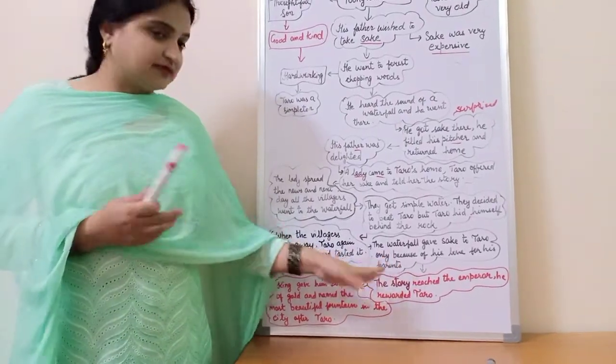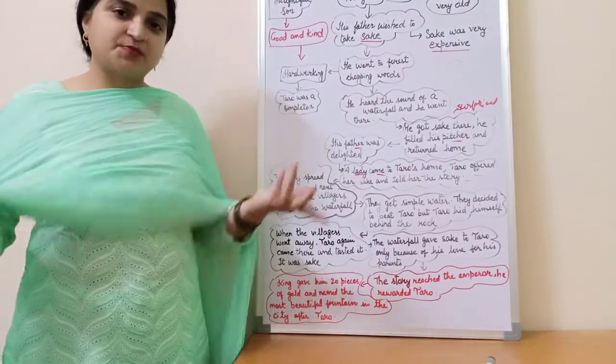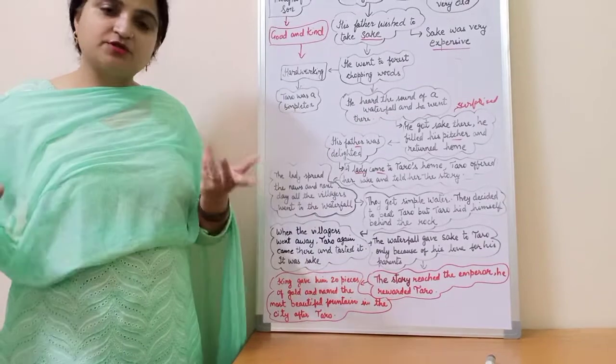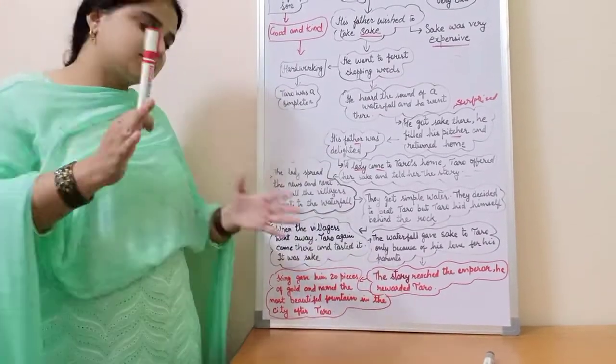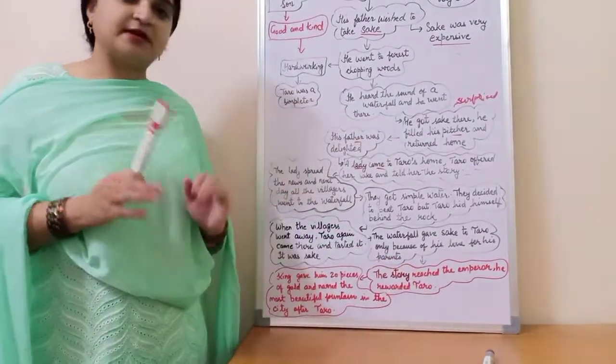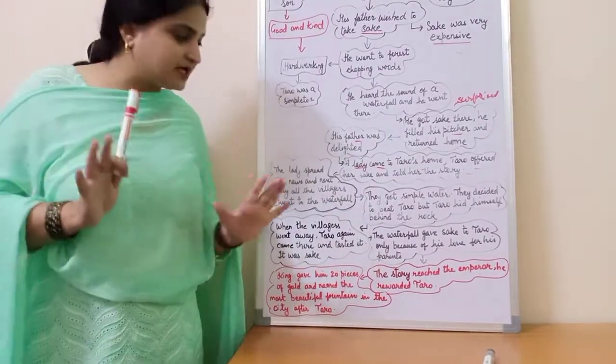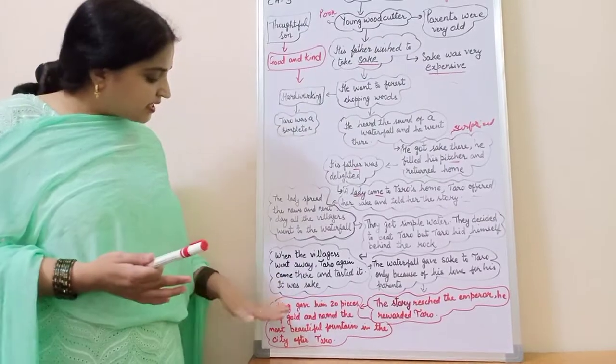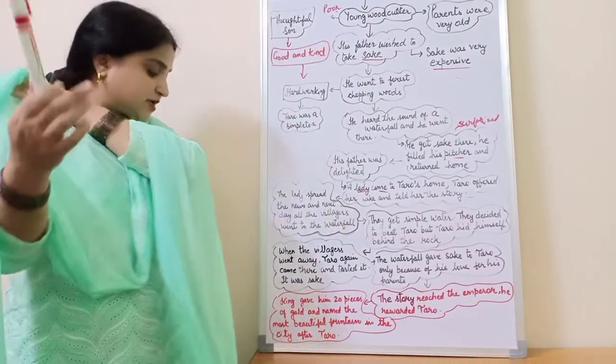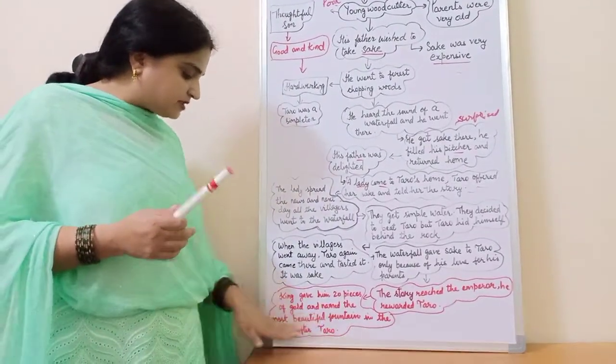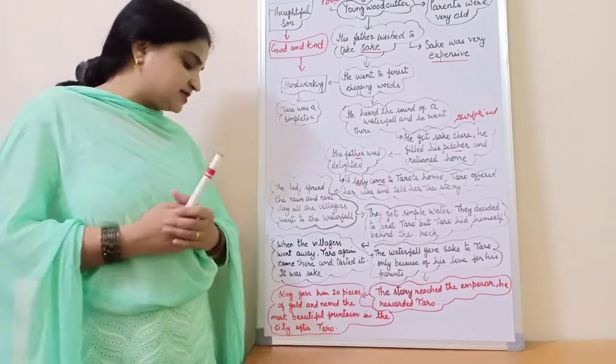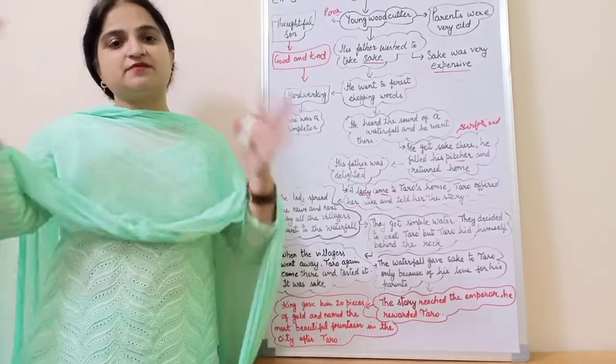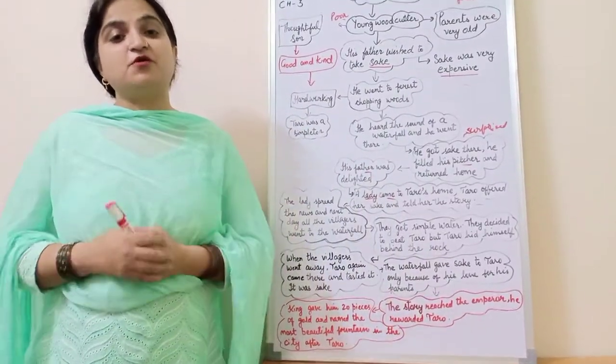And then the story spread. The waterfall gave sake only to Taro and the story reached the emperor. Emperor means the king of that place. And he rewarded Taro. How he rewarded Taro? King gave him 20 pieces of gold and named the most beautiful fountain in the city after Taro. Means he gave that most beautiful fountain the name of Taro.